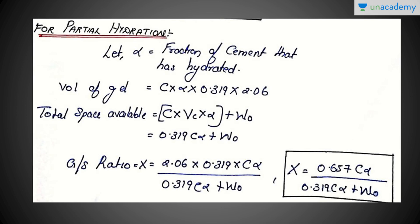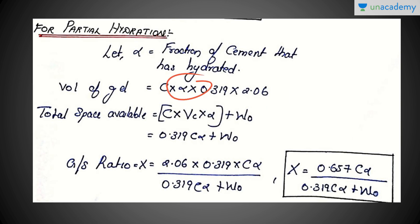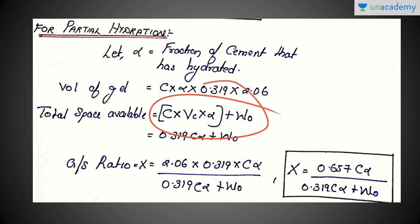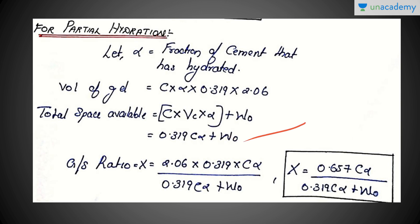Now let's move on to the gel space ratio for partial hydration. Here, alpha equals the fraction of cement that has hydrated. As mentioned, gel space ratio can be calculated at any age and for any fraction of hydration of cement — that fraction is alpha. The volume of gel now equals C × 0.319 × 2.06 × alpha, since we calculate for that fractional portion. The total space available becomes (C × VC × alpha) + W₀, which gives 0.319Cα + W₀.